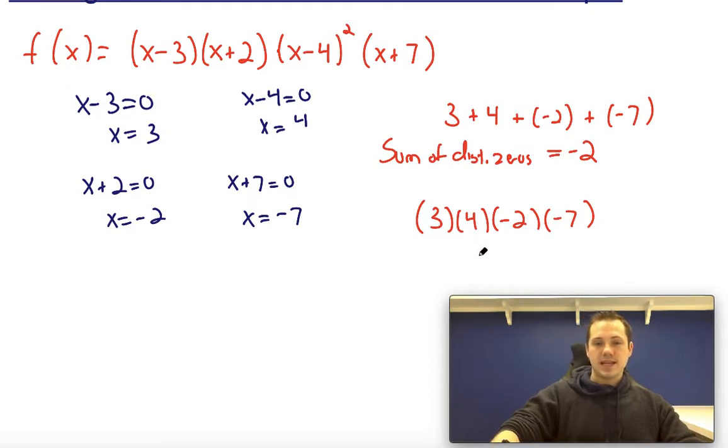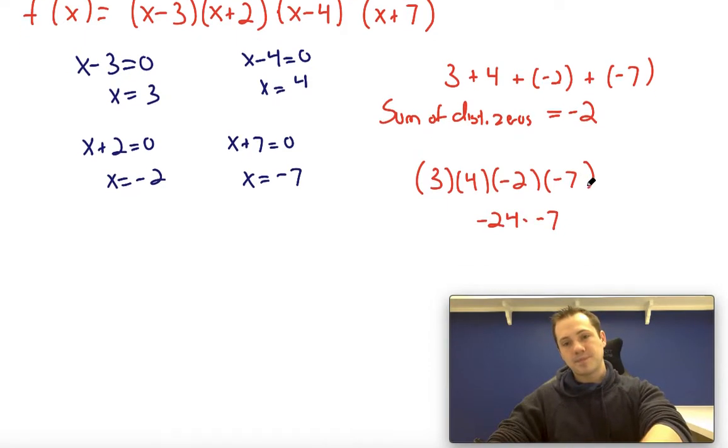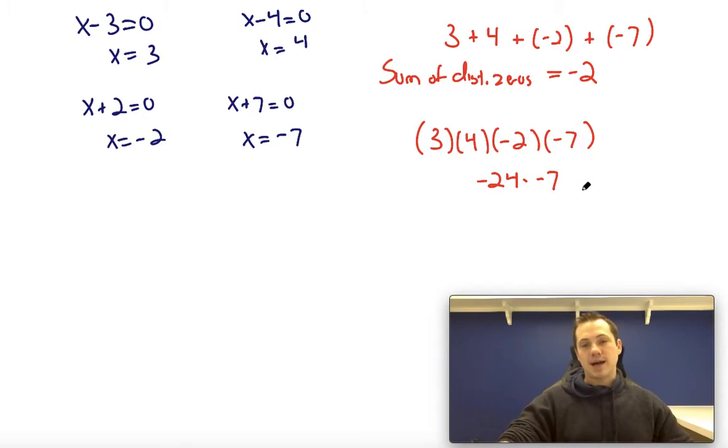And then you have negative 24 times negative 7. Now the negatives cancel, so this is just going to be a positive number. 20 times 7 is 140, plus 4 times 7 is 28. So when these multiply out, you would find that the product would be 168.